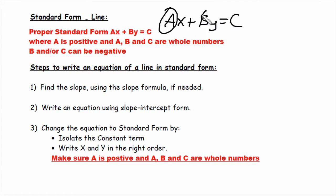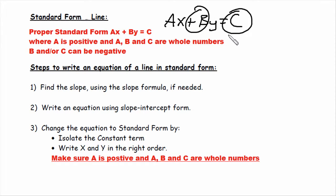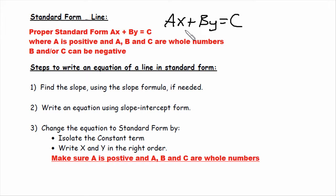Where a, b, and c are numbers. x and y stay as variables when you write your final equation. There are some rules: a must be positive for proper standard form, and a, b, and c are whole numbers — no decimals, no fractions. b and/or c can be negative, but a, the coefficient of the x term, must be positive.